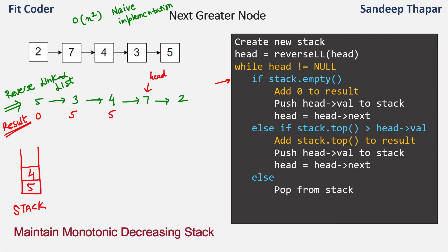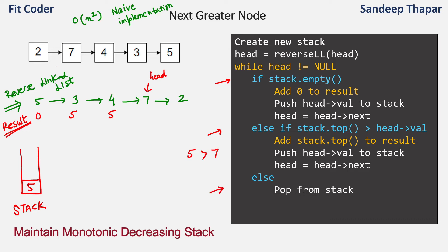In the next iteration, stack is not empty. Stack top is 4 — we check if it is greater than head value 7, which is false. We pop 4 from the stack since it is less than 7. Again, stack top is 5, which is also less than 7 — so we pop 5 as well. The stack is now empty, so we append 0 to the result for node 7, meaning there is no greater value. We push 7 onto the stack and move head to the next node, which is 2.